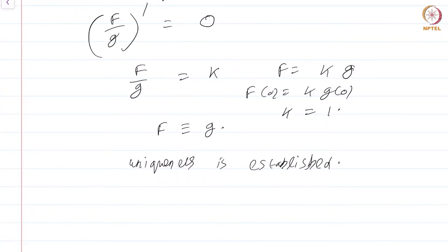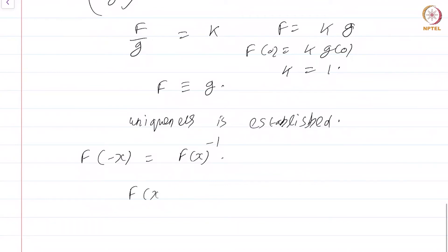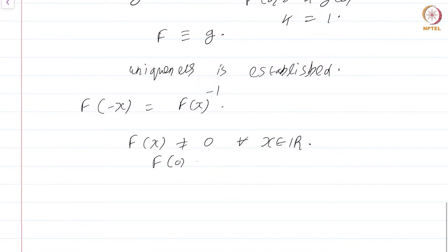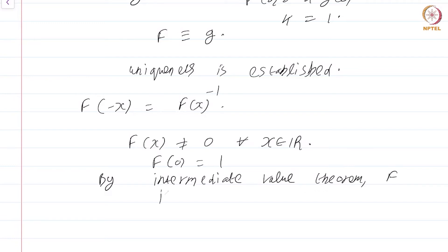We have also obtained a useful fact from the proof: f(−x) = 1/f(x). Please keep this in mind. We already know f(x) ≠ 0 for all x and f(0) = 1. By the intermediate value theorem, since f is continuous — in fact smooth, given by a power series — f is never negative. The function whose existence and uniqueness we have established is always positive.